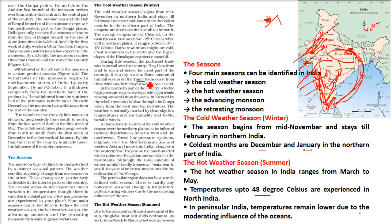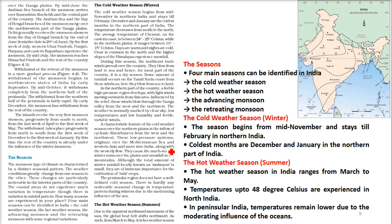Some rainfall occurs on the Tamil Nadu coast because winds blow from sea to land there. In the northern part of the country, a feeble high pressure region develops and light winds move from this area. Due to the varied relief, these winds blow through the Ganga valley from the west and northwest. The weather is normally marked by clear sky, low temperature, low humidity, and feeble variable winds.